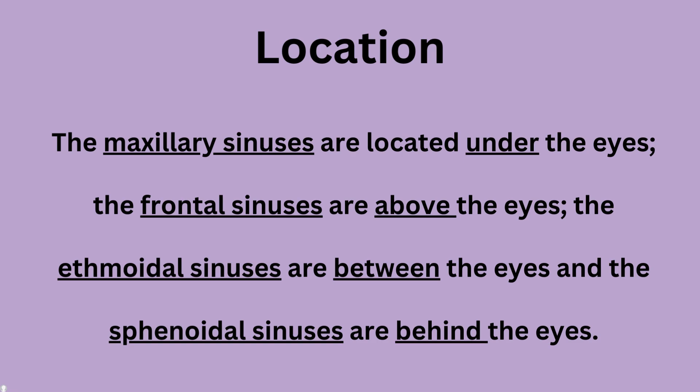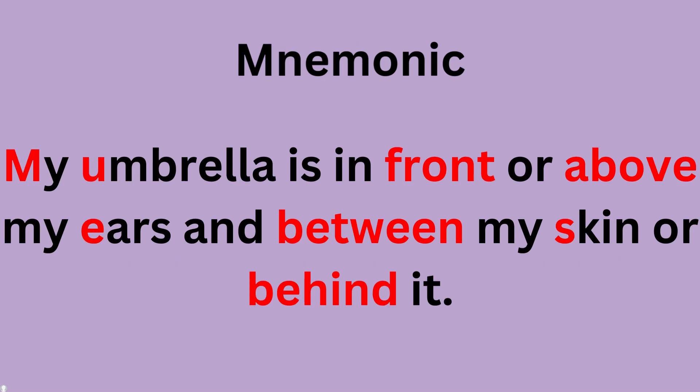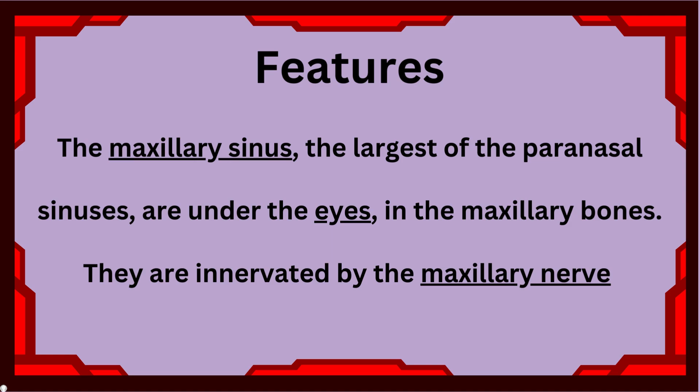Here is a mnemonic to easily memorize it: 'My umbrella is in front, above my ears, and between my skin or behind it.' 'My' is maxillary sinus — under your eyes. Frontal sinus is above your eyes. Ethmoidal sinus is between your eyes. Sphenoidal sinus is behind your eyes.